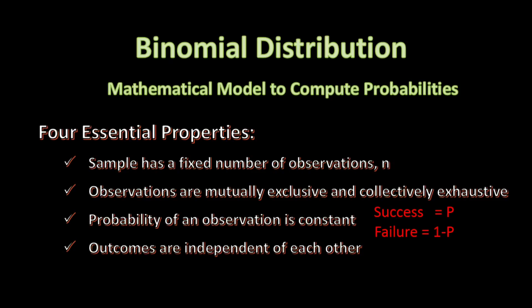And the fourth important property is that the outcomes, whether they are successes or failures of any observation, is independent of the outcomes of any other observations.